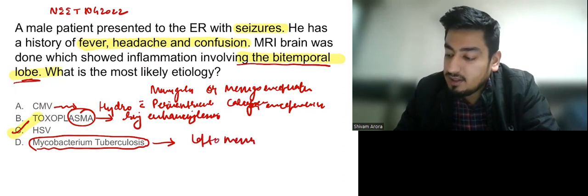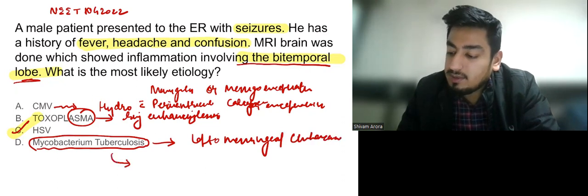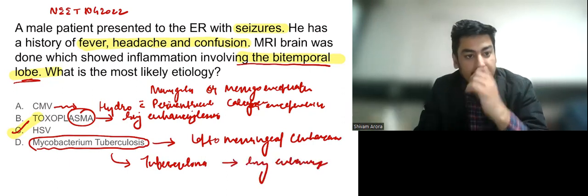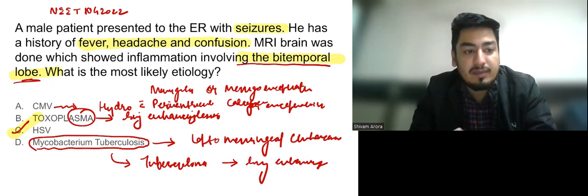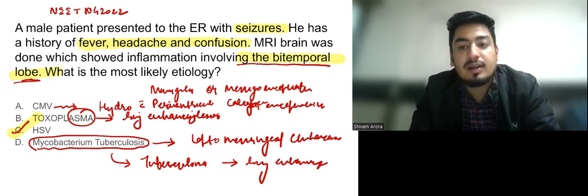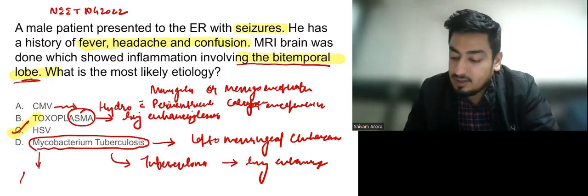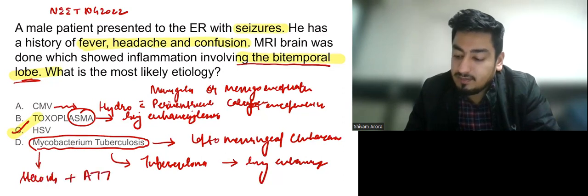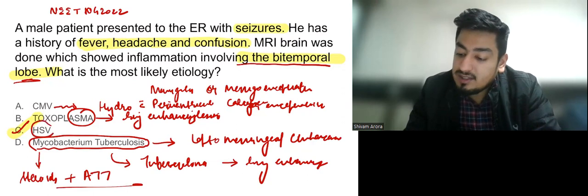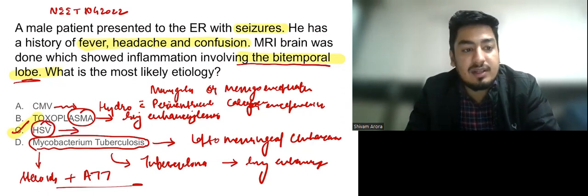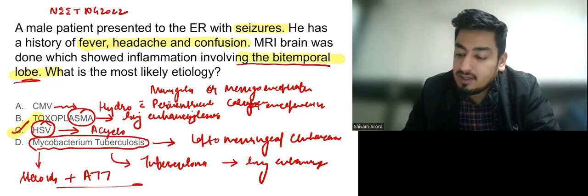Now let us discuss treatment. For Mycobacterium TB presenting as tubercular meningitis, the treatment is steroids plus anti-TB therapy (ATT). If it is HSV encephalitis, then supportive management plus acyclovir is given.